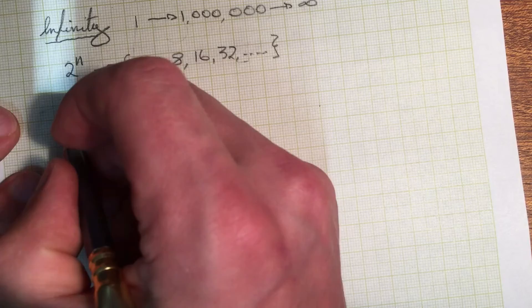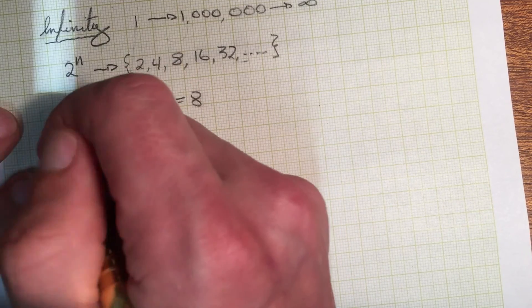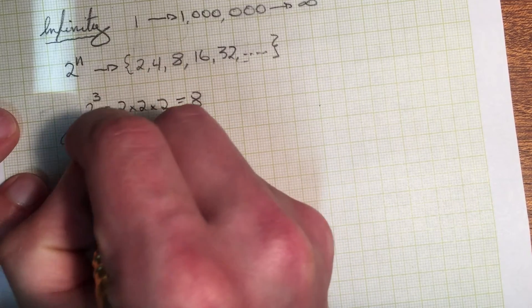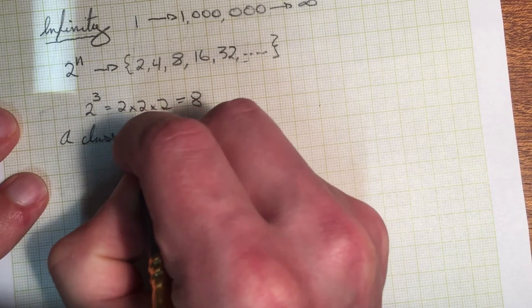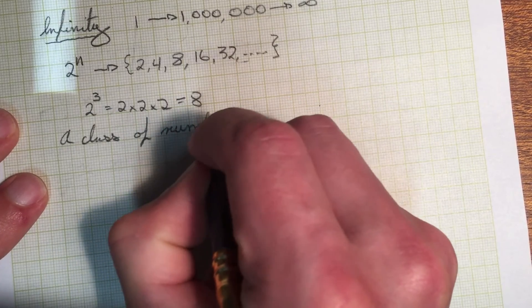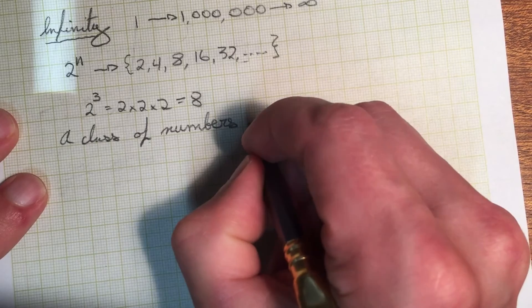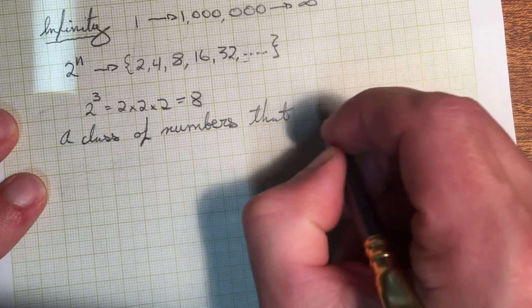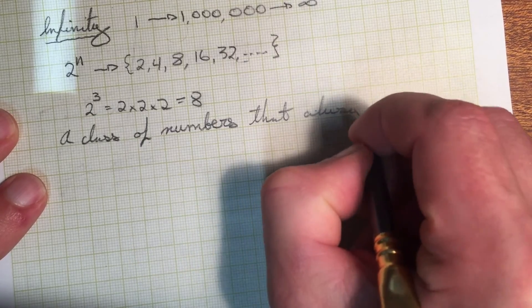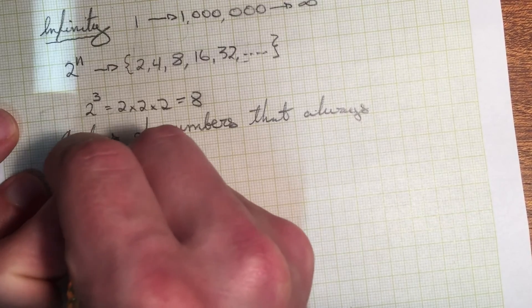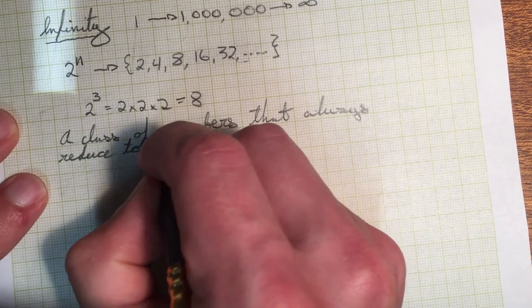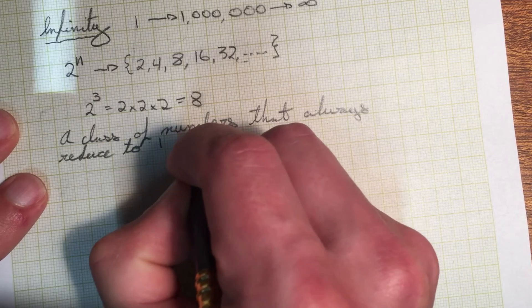But immediately, with a little bit of thought on my own, I had found a class of numbers that always reduced to one in the conjecture.